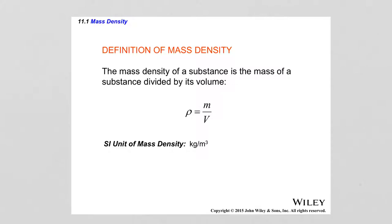If you take two different substances with the same mass, you would find out that in general they would have different volumes, and those volumes would depend on the type of substance in consideration, which means that their densities will be different. As a matter of fact, the density of a substance can be used as an identifying property for a particular substance.